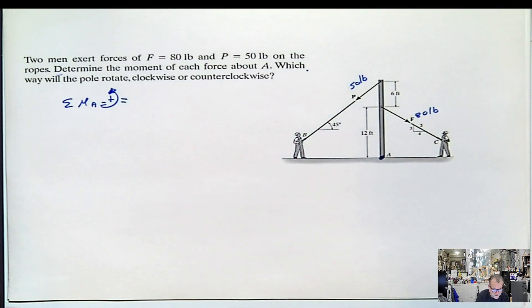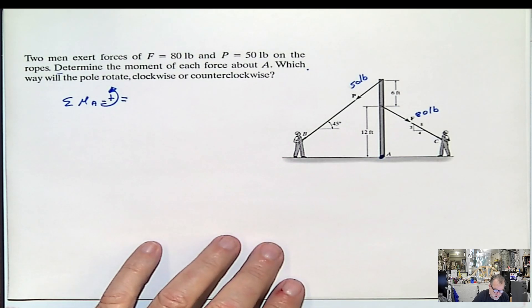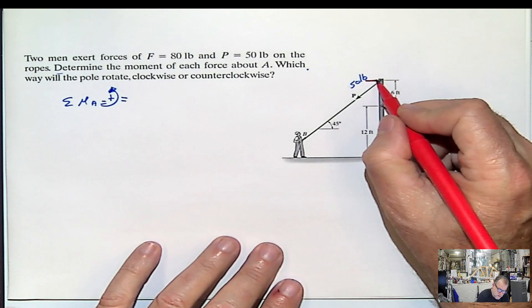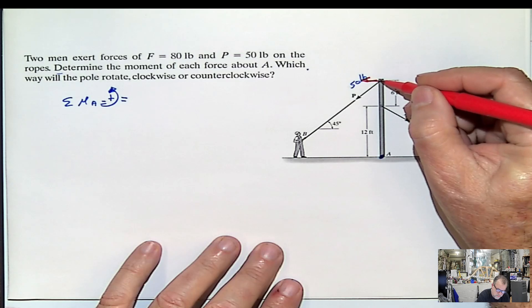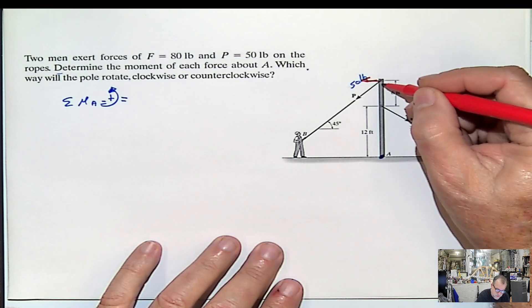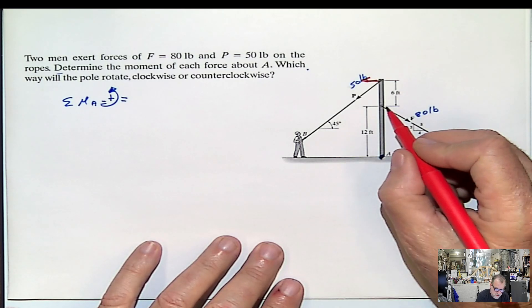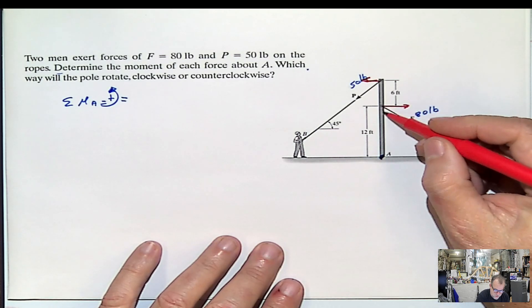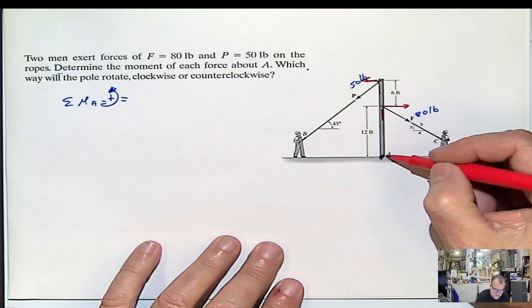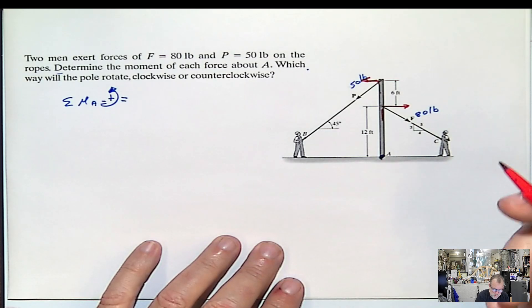Otherwise it will give us the direction that we need. And in order to do this problem, we just need this component and the vertical. But the vertical component passes through the point. You see that? And it's not producing moment. Same with this one. We need this component and the vertical, but the vertical one passes through point A, so I don't have even to worry about that.